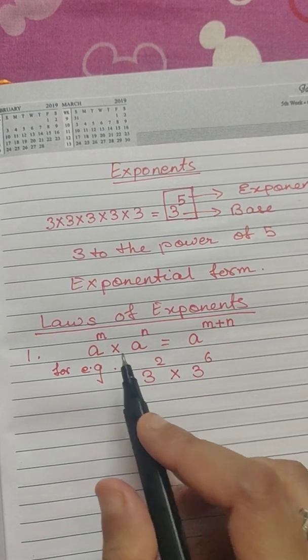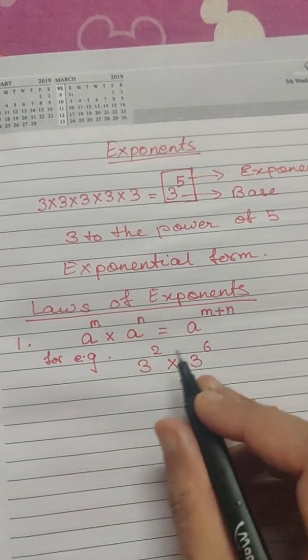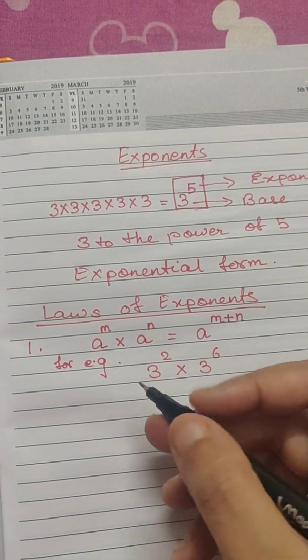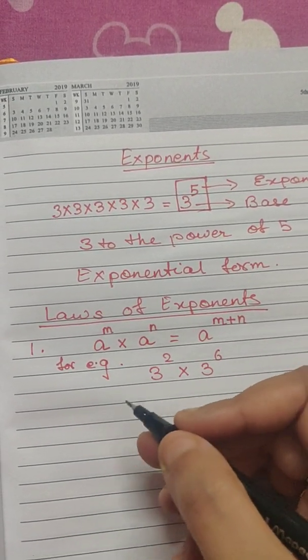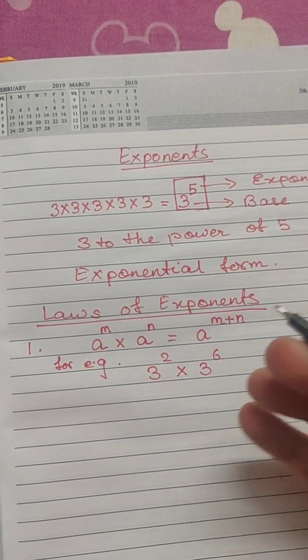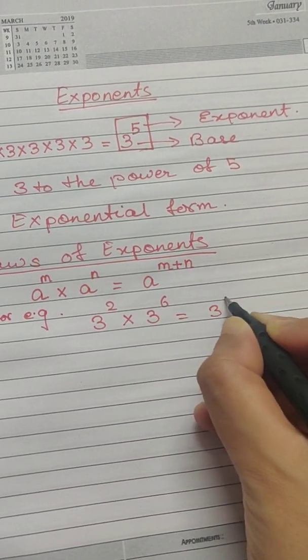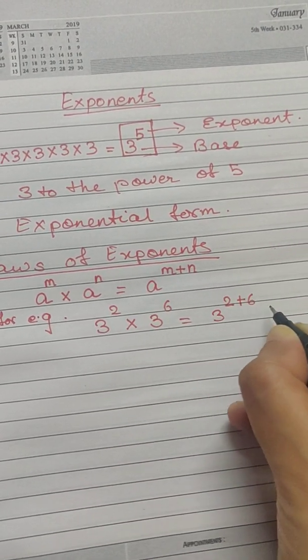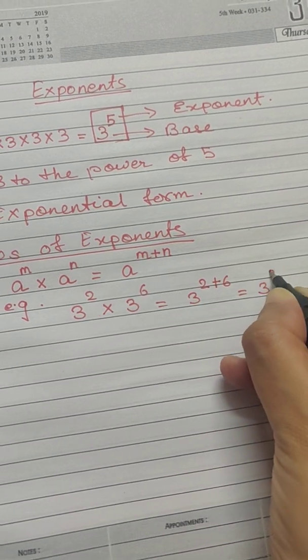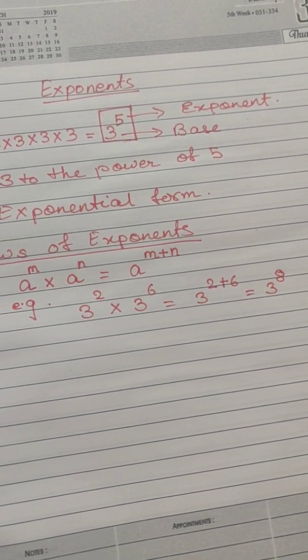And as the bases are the same, so same alphabet has been used for the bases. So, in this case, instead of finding 3 into 3 is equal to 9 and then continuing like that, we will simply add the exponents and we will get the answer to be 3 to the power of 8.